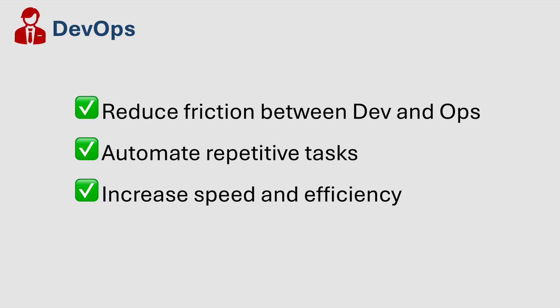When a developer creates a new feature, DevOps focuses on automating the testing, integration, and deployment of this new feature into the production environment without causing downtime. In summary, DevOps ensures that every code change is deployed safely and reaches users without interruption, making the delivery process faster and more efficient. It's all about speed.